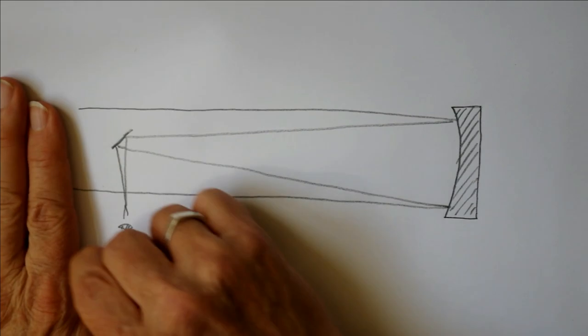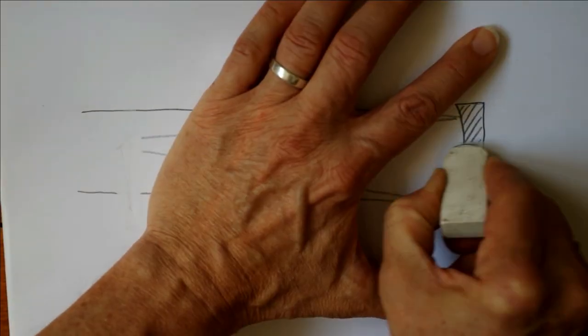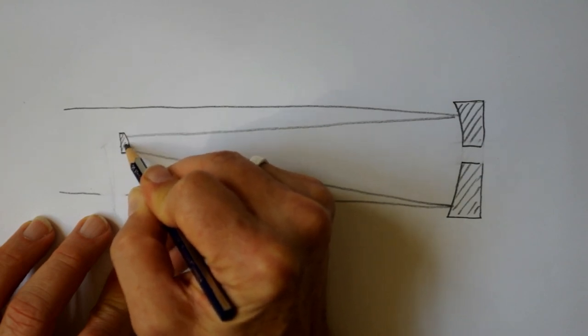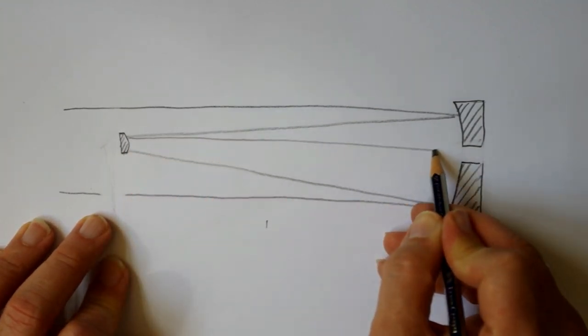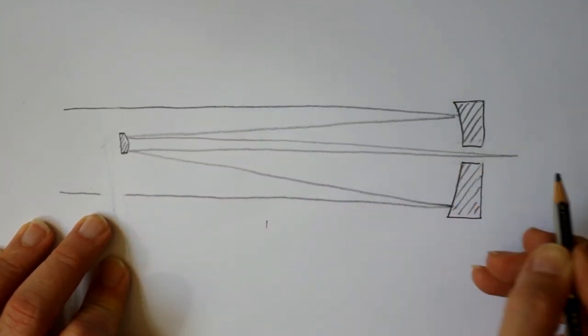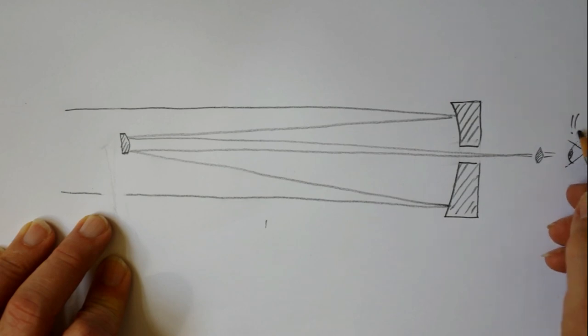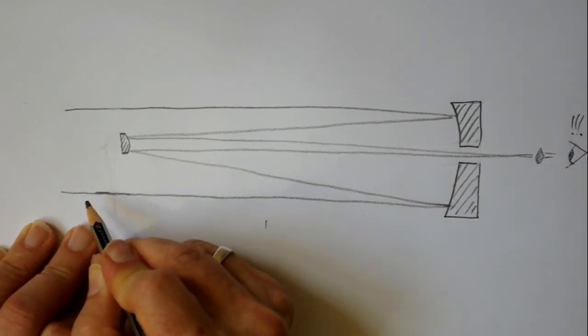There it stayed until a priest called Cassegrain designed a new type. He took the basic Newtonian mirror, and instead of having a flat mirror at the front, he used a convex mirror that pointed back down the tube and he cut a hole in the main mirror. The convex mirror meant that the angle of the final light cone was really sharp, so through the eyepiece it looked like a super long tube.